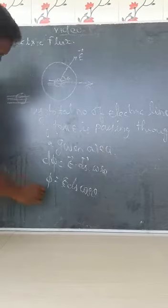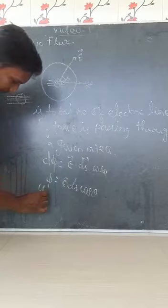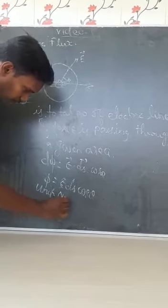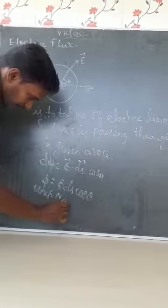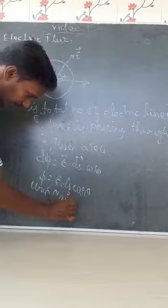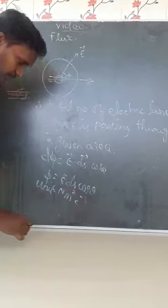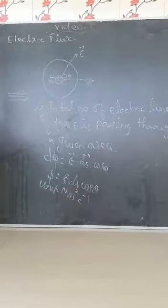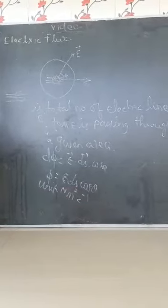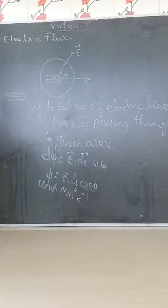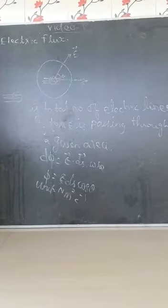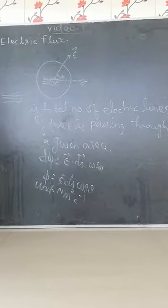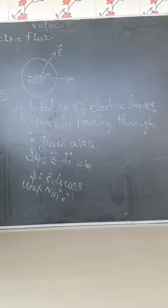And what is the unit of electric flux? The unit is Newton meter squared per Coulomb (N·m²·C⁻¹). This is the unit for electric flux. Thank you.